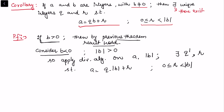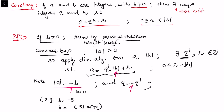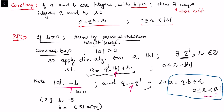When b < 0, |b| = −b. For example, if b = −5 then −b = 5 > 0. Setting q = −q', we have a = q'|b| + r = q'(−b) + r = (−q')b + r = qb + r, with 0 ≤ r < |b|. This extends the division algorithm to any non-zero integer b, with the only requirement being b ≠ 0.